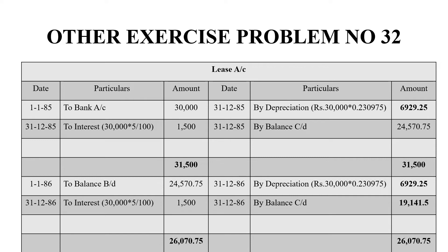On the credit side, we have depreciation. The depreciation is calculated using the annuity table. For 5 years at 5%, there is a specific value in the annuity table. They have provided the value in the question rather than requiring us to use a logbook. Multiplying 30,000 by the annuity table factor gives depreciation of 6,929 rupees 25 paise. When we total both sides, the balancing figure on the credit side is 24,570 rupees 75 paise, and the grand total on both sides is 31,500.